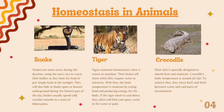Next, we have Crocodile. Crocodile's skin is specially designed to absorb heat and maintain body temperature, which is around 30 to 33 degrees Celsius. To achieve that, they move back and forth between warm and cool parts of the environment.